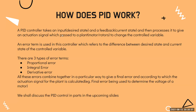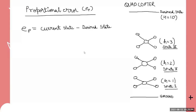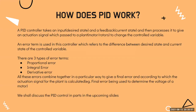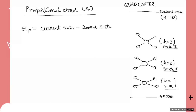For proportional error, the error is current state minus desired state. Let's take the example of a quadcopter — say we have a high-tech quadcopter and the desired state is height h equals 10 meters. Now, let's say it's at height 1, then height 3, then height 8 — we take these three states and calculate ep, the proportional error, which is simply h_current minus 10.